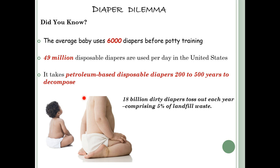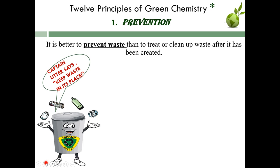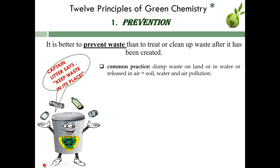The same thing applies to chemistry. Diapers and plastic can take 200 to 500 years to decompose — they stay accumulated in the environment for so long. Why not substitute such products with something else? Why not prevent the use of such products and the generation of such waste? The first principle is: it is better to prevent waste than to treat it or clean it up.